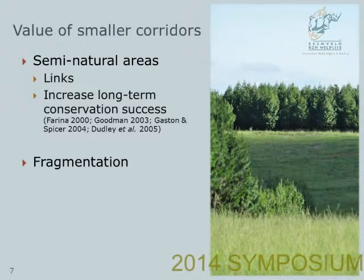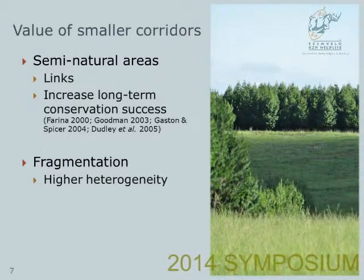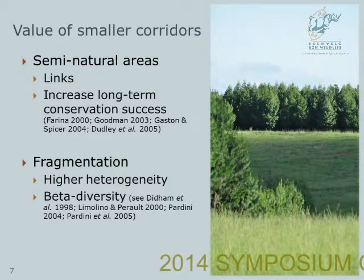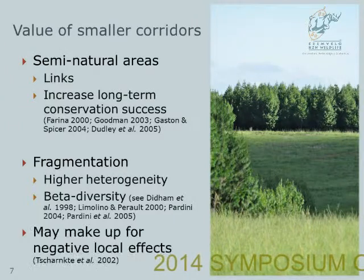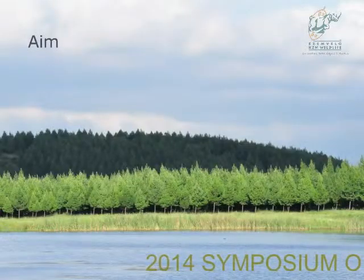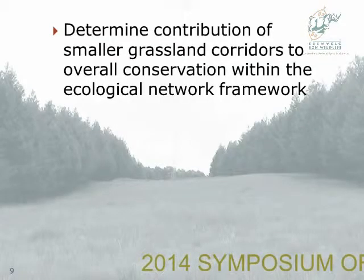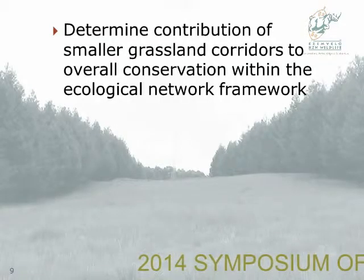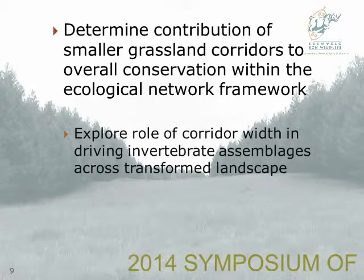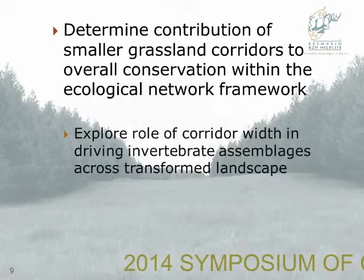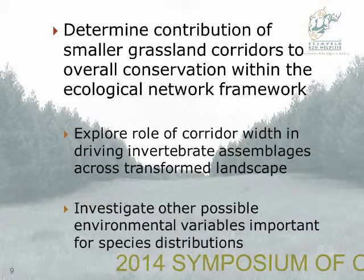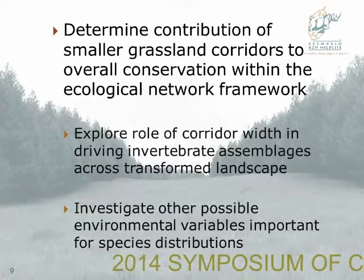Fragmentation has also been associated with high environmental heterogeneity, which is associated with higher beta diversity, and the higher beta diversity among these patches may make up for the local negative effects of fragmentation. So the aim of the project was to determine the contribution of smaller grassland corridors to the overall conservation within the ecological network framework, by exploring the role of corridor width in driving invertebrate assemblages across this transformed landscape and by investigating other possible environmental variables important for species distributions.